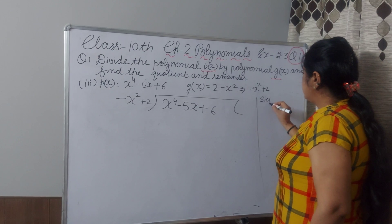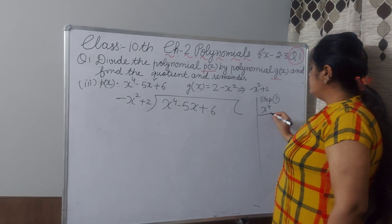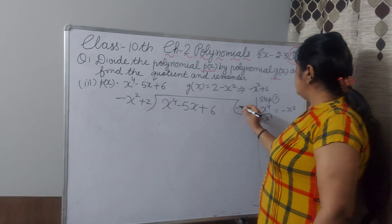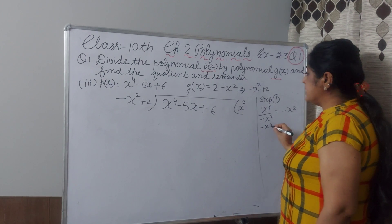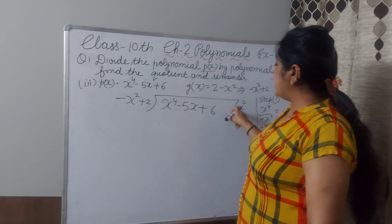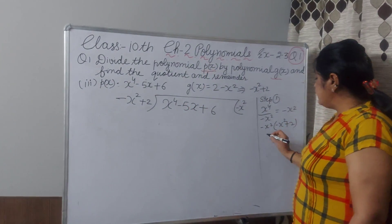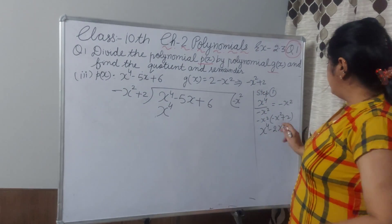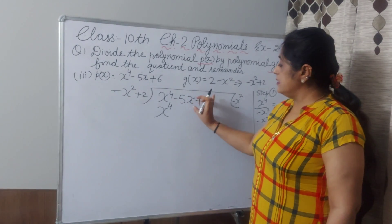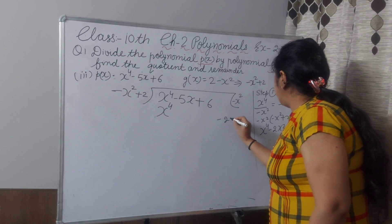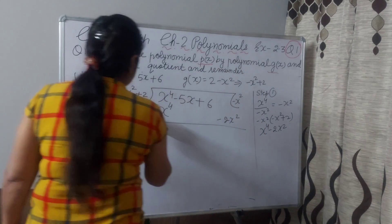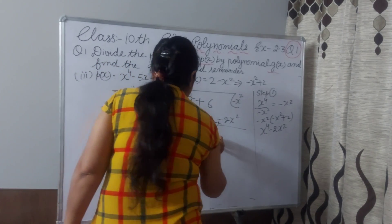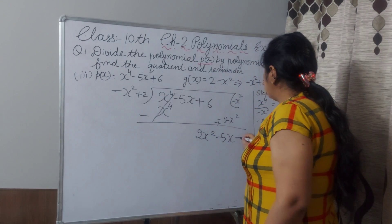Step 1: x⁴ divided by minus x² gives minus x². Write minus x² in the quotient. Multiply minus x² by the divisor minus x² plus 2: minus times minus gives plus x⁴, and minus x² times 2 gives minus 2x². Write x⁴ and minus 2x² separately. Change the sign: x⁴ becomes minus, and minus 2x² becomes positive. x⁴ is cancelled. Bring down 2x², minus 5x, and carry 6.